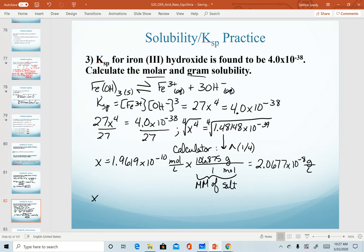Noting our final answers, x is, with sig figs, 2.0 × 10⁻¹⁰ molar, or you can write that out as moles per liter. It is also 2.1 × 10⁻⁸ grams per liter. Those would be your final answers for the molar and gram solubility.